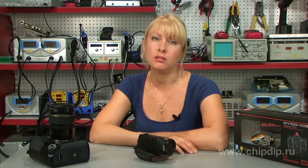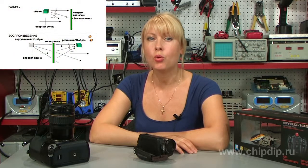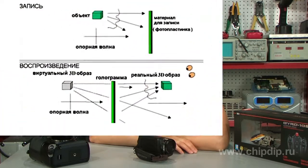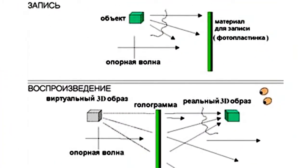Holography is a system of methods of recording and reproducing the spatial structure of monochromatic or quasi-monochromatic optical fields. Thus it is possible to see a partially common task of holography and photography: recording, storing, and reproducing visual images of objects.